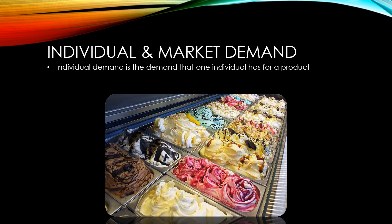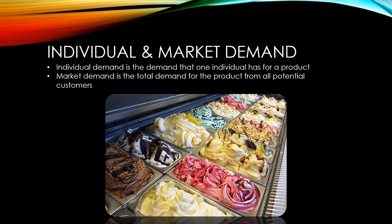Individual demand is the demand from one individual customer for a product — how many of the item would they buy at each given price point in this particular time period? Market demand is what we get if we add together all the individual demands of all the potential customers for the product.